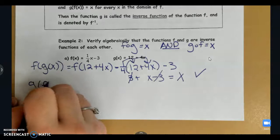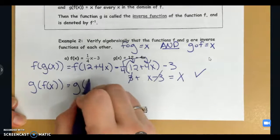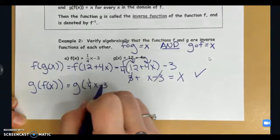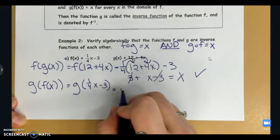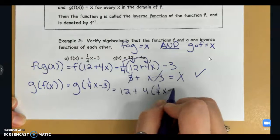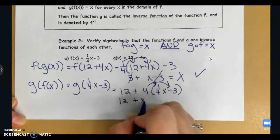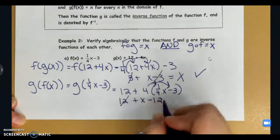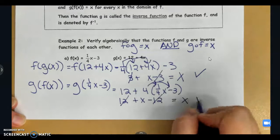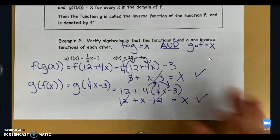Then we have to do it the other way around where we plug in f to our g function. That 12 carries down, distribute that 4, get x minus 12. 12 and minus 12 cancel and we're left with x. So f and g are in fact inverses of each other and we just proved that.